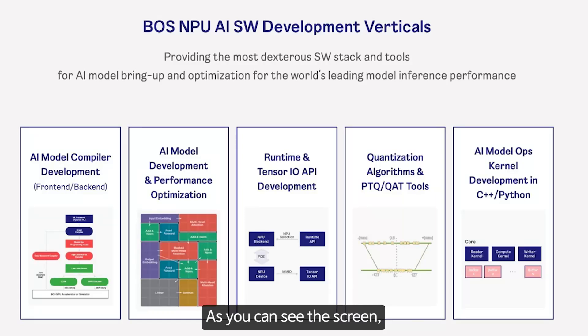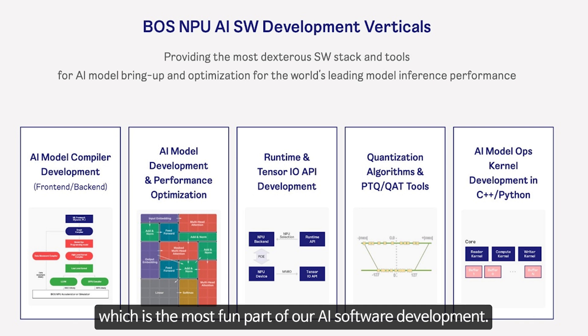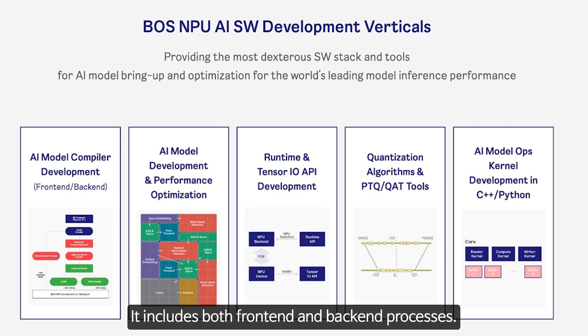As you can see on the screen, we have five developed verticals. The first vertical is AI model compiler development, which is the most fun part of our AI software development. It includes both front-end and back-end processes.